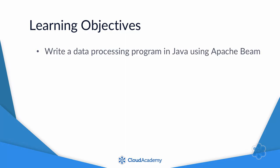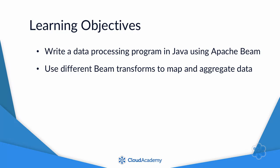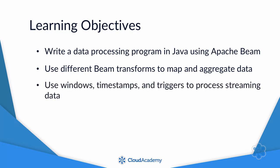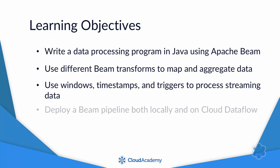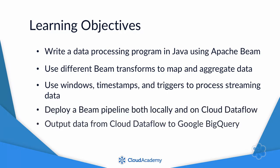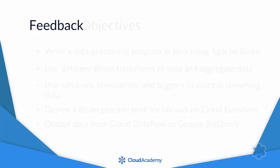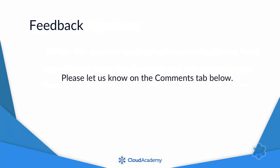By the end of this course, you should be able to write a data processing program in Java using Apache Beam, use different Beam transforms to map and aggregate data, use windows, timestamps, and triggers to process streaming data, deploy a Beam pipeline both locally and on Cloud Dataflow, and output data from Cloud Dataflow to Google BigQuery. We would love to get your feedback on this course, so please let us know what you think on the comments tab below or by emailing support at cloudacademy.com. Now, if you're ready to learn how to get the most out of Dataflow, let's get started.